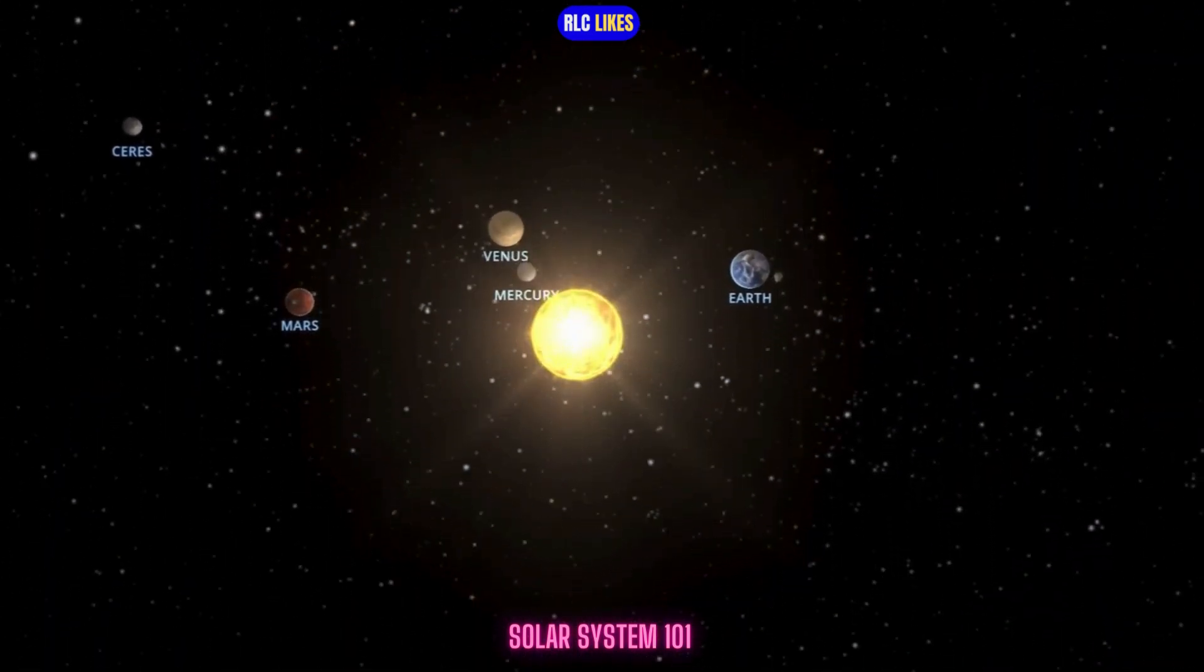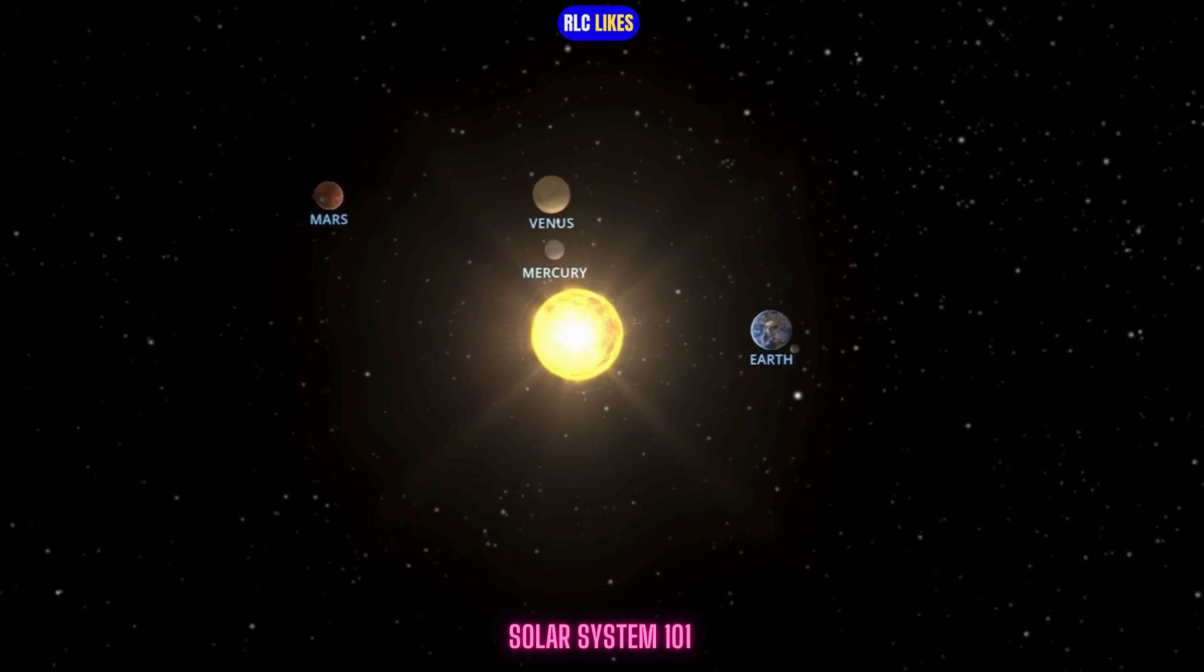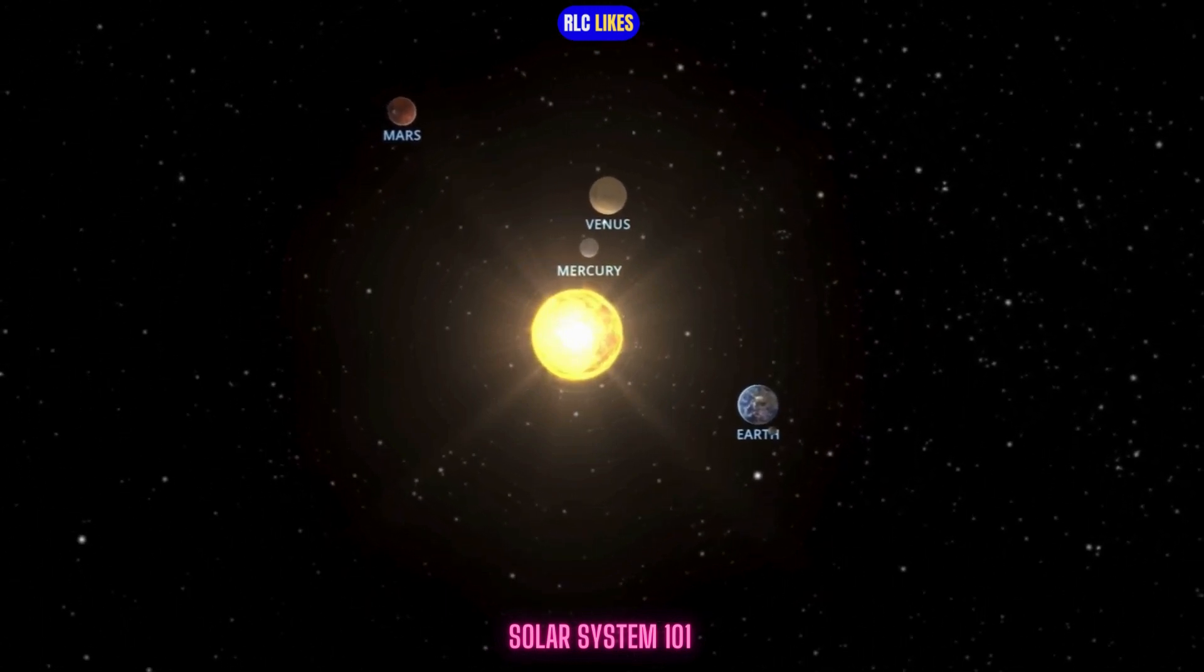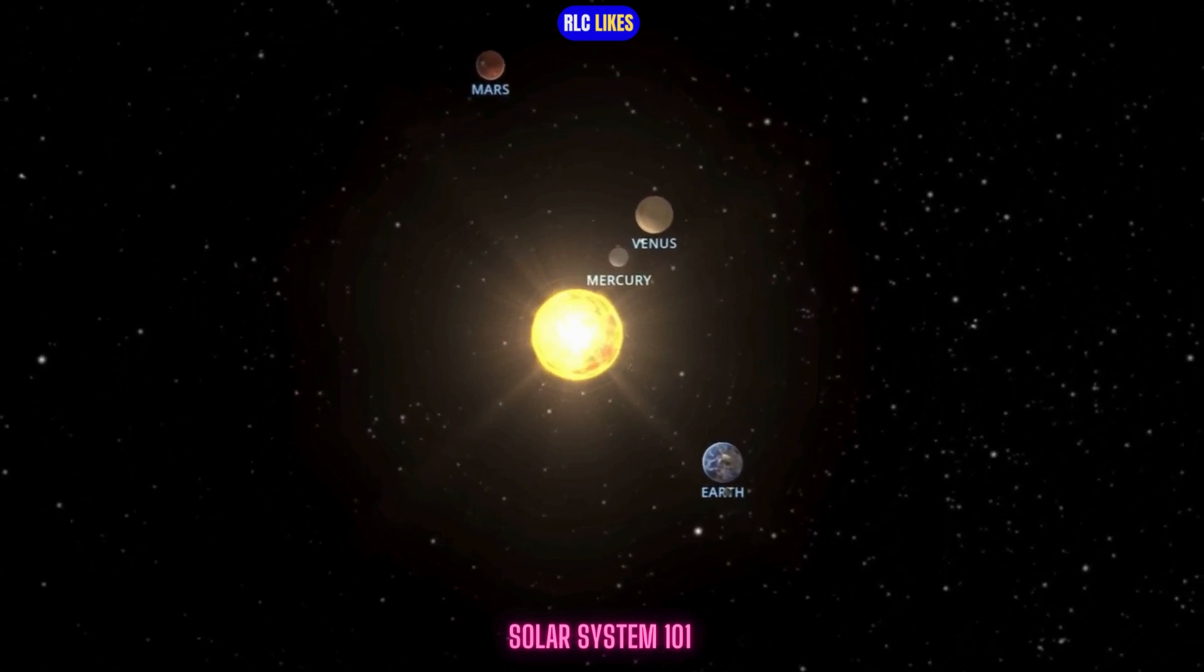The solar system has one star, eight planets, five dwarf planets, at least 290 moons, more than 1.3 million asteroids, and about 3,900 comets.